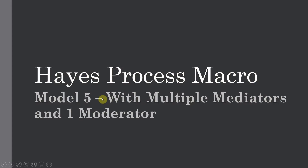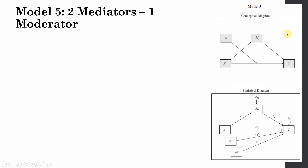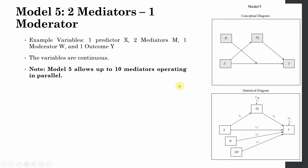Here is PROCESS Macro Model 5 with multiple mediators and one moderator. This model can have up to 10 mediators and one moderator that moderates the direct relationship between X, the independent variable, and Y, the dependent variable. In the statistical diagram, X and W represent the interaction term, and all variables are continuous.